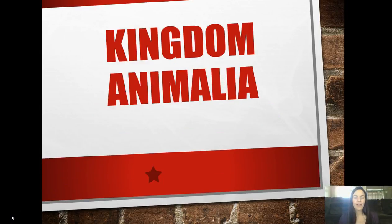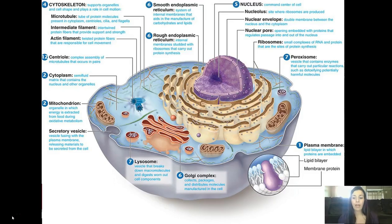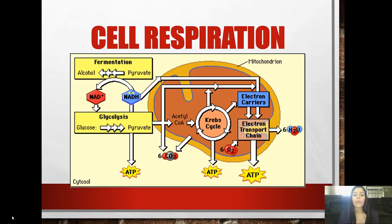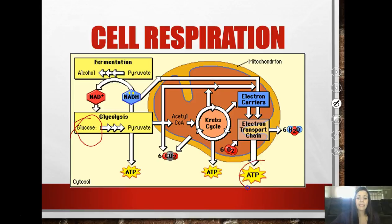Here is your Kingdom Animalia introduction video. First we're just going to touch very briefly on cell organelles and their functions. You should be familiar with all of these items. If you're not, please go back and review your information from theme two. You should also be familiar with cell respiration - that's when glucose goes in and you get lots and lots of ATP as your end result.